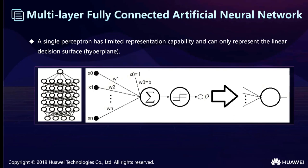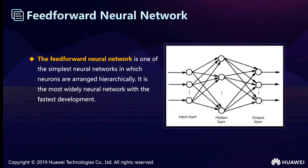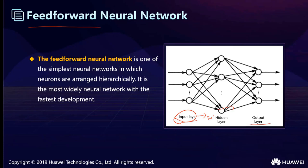Each node in the previous layer connects to all the nodes of the next layer, and each node has an activation function in the hidden layers. This is the feed-forward neural network: when we input our data, we calculate the output layer by layer from the input layers to the output layers. It is very widely used, and we use these structures to build neural networks.